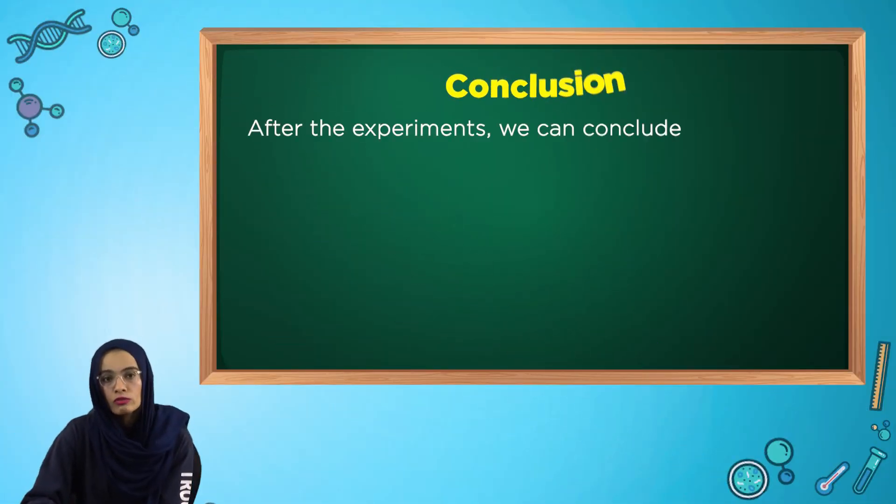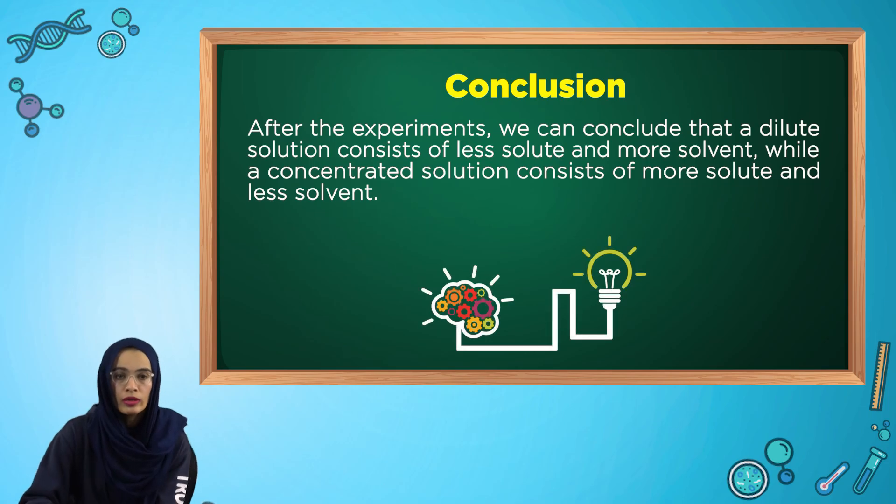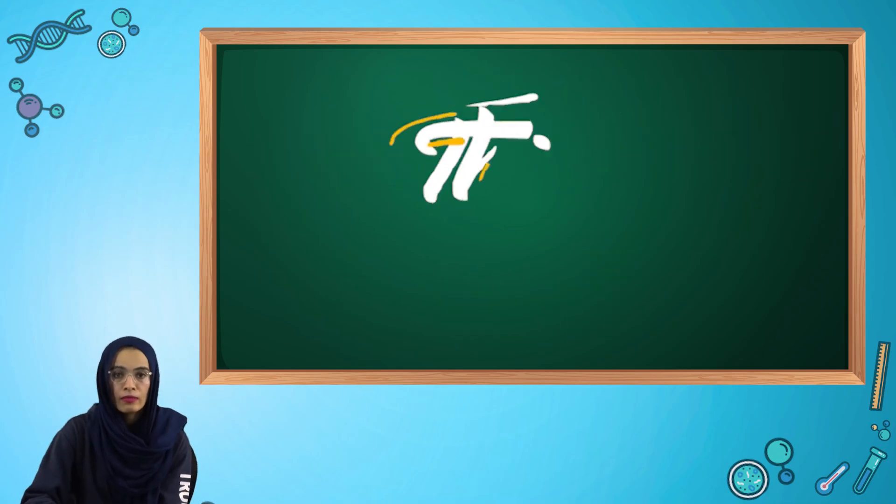So after watching the video, I'm sure you are able to understand the difference between a strong solution or a concentrated solution and weak solution or a dilute solution. So we can conclude that a dilute solution consists of less solute and more solvent while a concentrated solution consists of more solute and less solvent. Thank you.